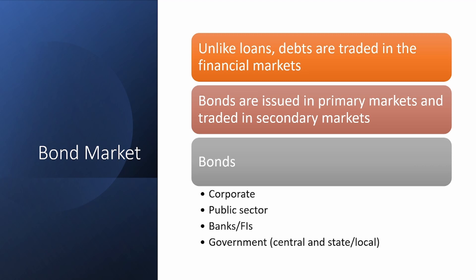There are different types of bonds: corporate bonds, public sector bonds, bank and financial institution bonds, and government or central bank bonds. Bonds are documents used by corporations, banks, financial institutions, and governments to raise money from the open market. For example, the US government can raise money domestically from US people, corporations, or banks, or from abroad — from foreign governments, foreign banks, or even individual foreign investors buying government bonds.